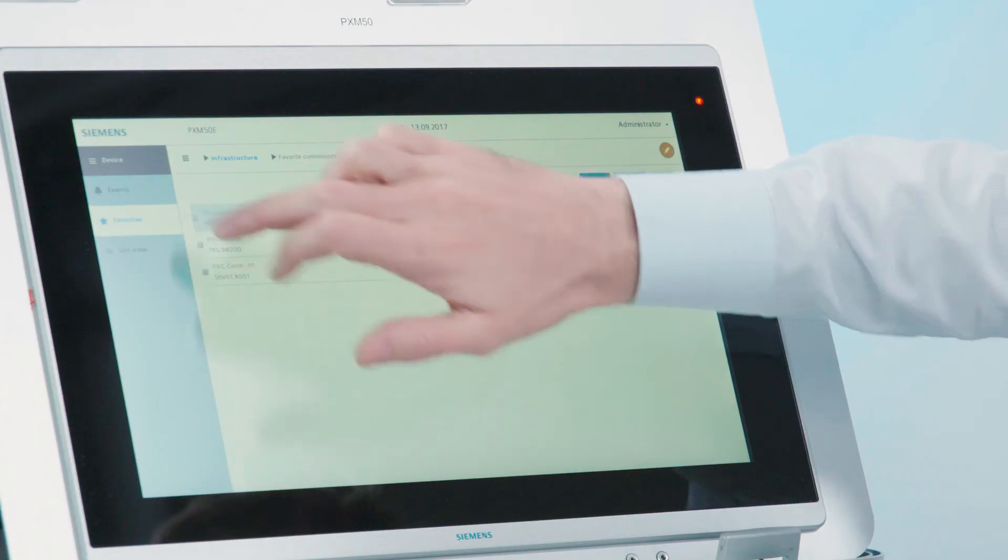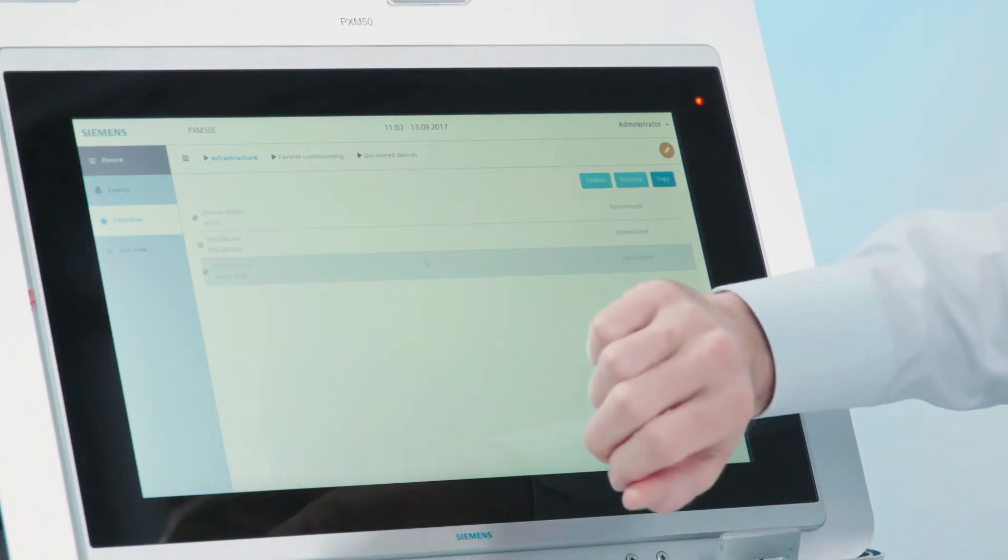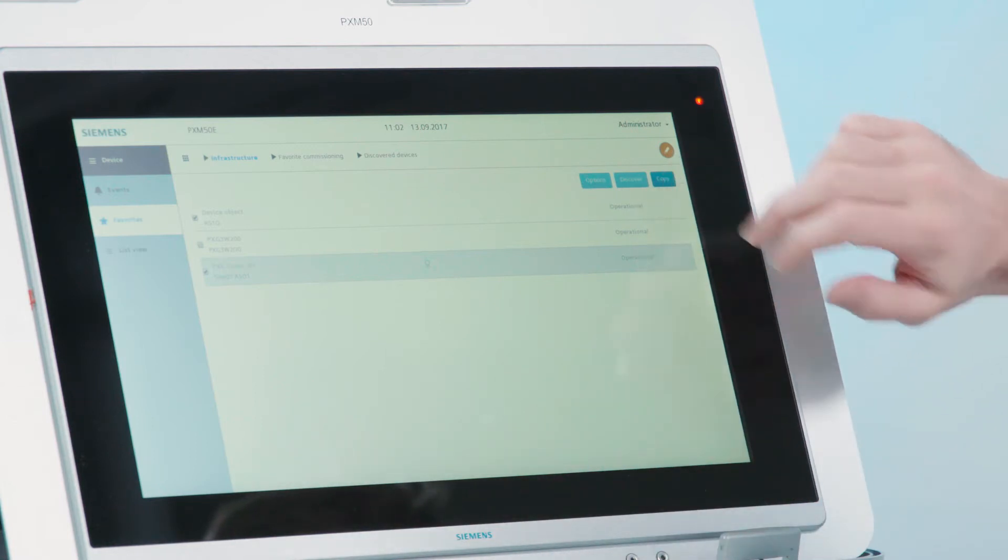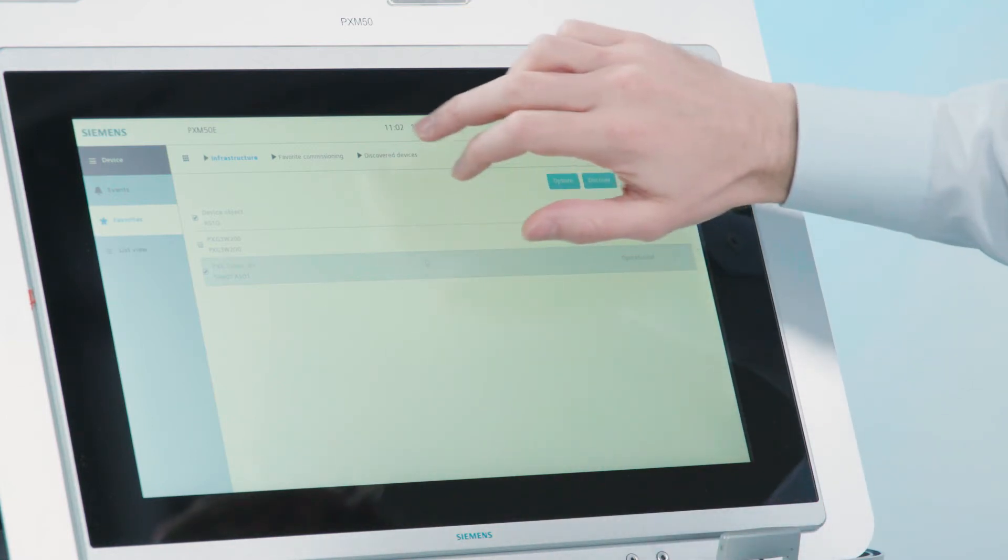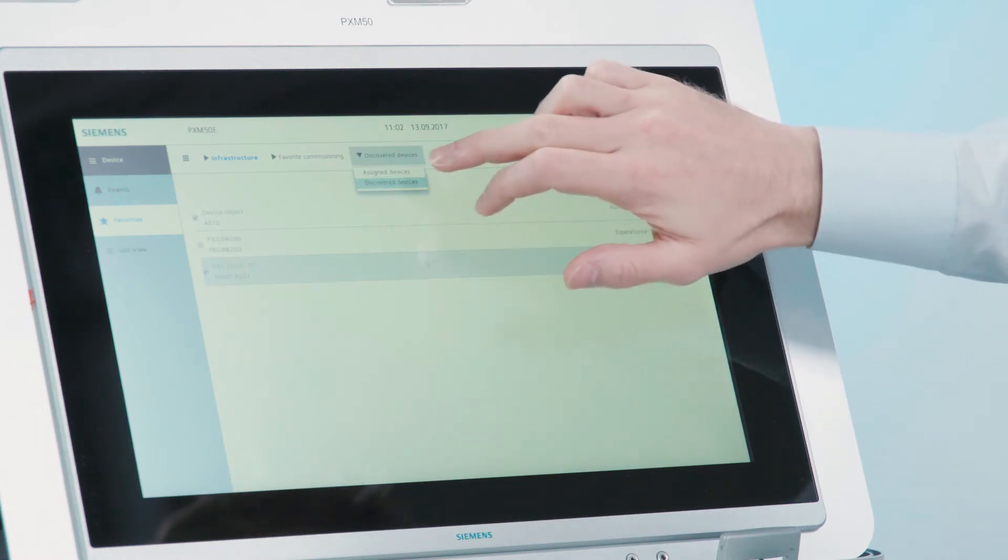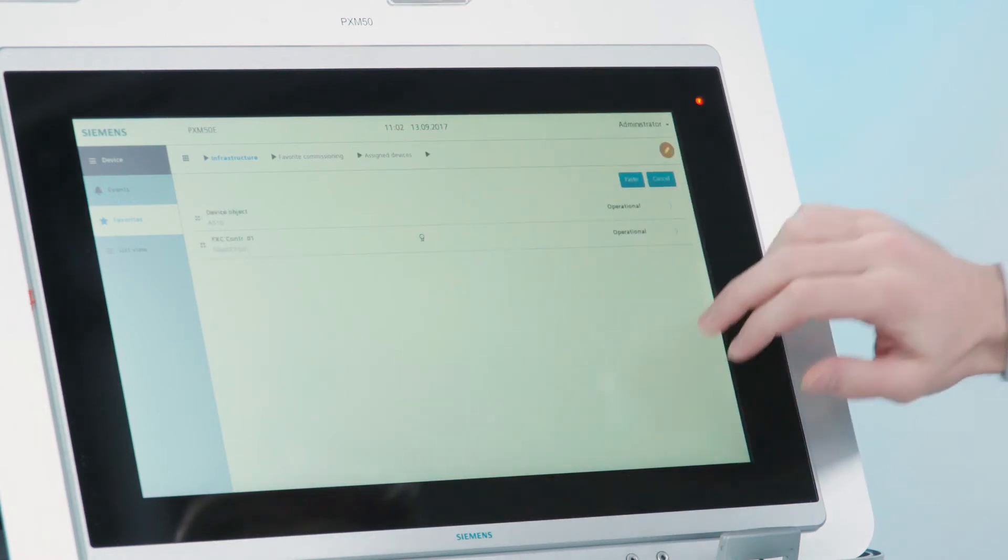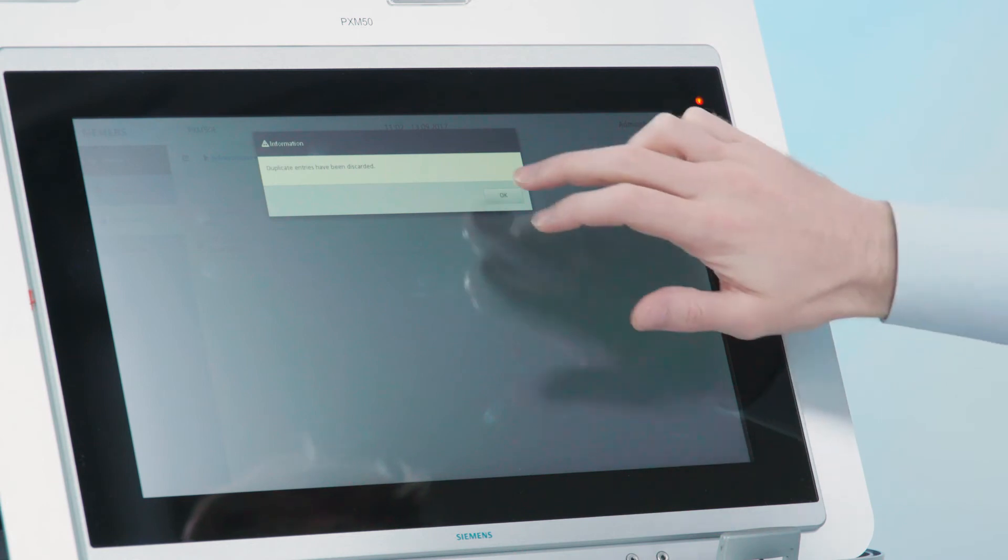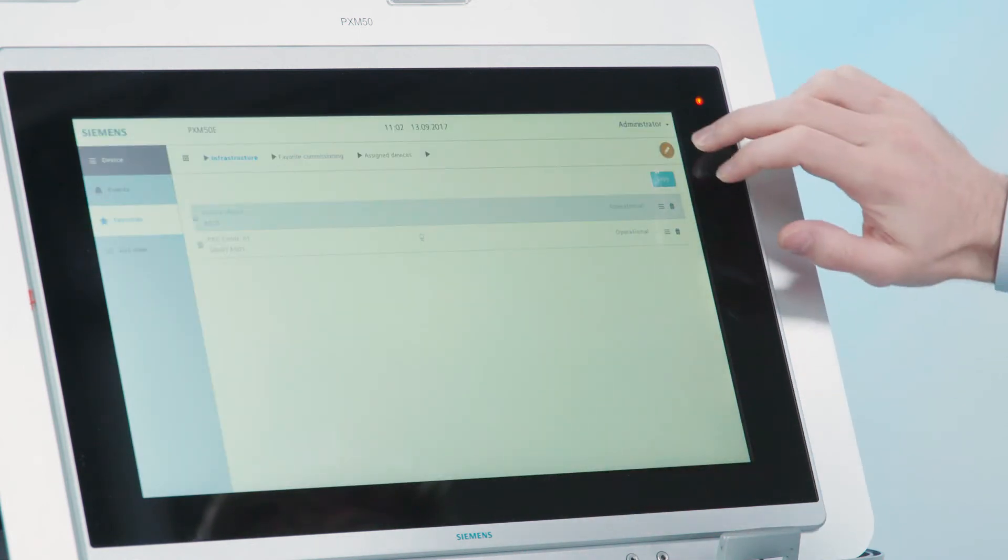From those devices, you pick the ones that you want to operate by checking the box. Once you've done that, hit copy. Navigate via the breadcrumb to assigned devices, where you hit paste and deactivate the edit pencil.